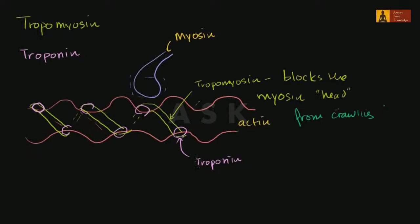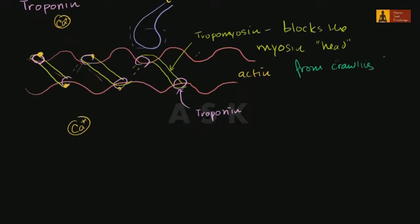The only way to unblock it is for the troponins to change their conformation — to change their shape. And the only way for them to change their shape is if we have a high calcium ion concentration. If you have a high enough concentration, those calcium ions will bond to the troponin, and that changes the conformation of the troponin enough to move the tropomyosin out of the way.